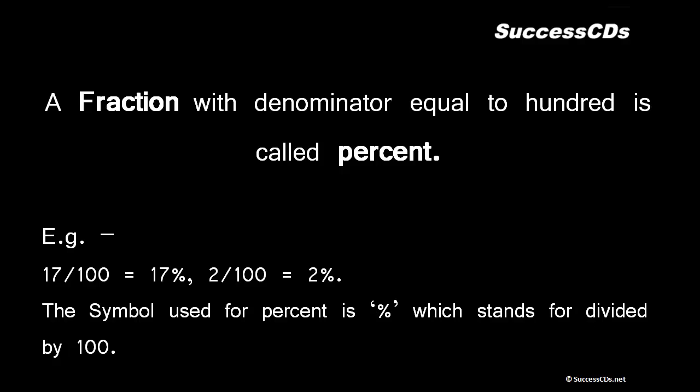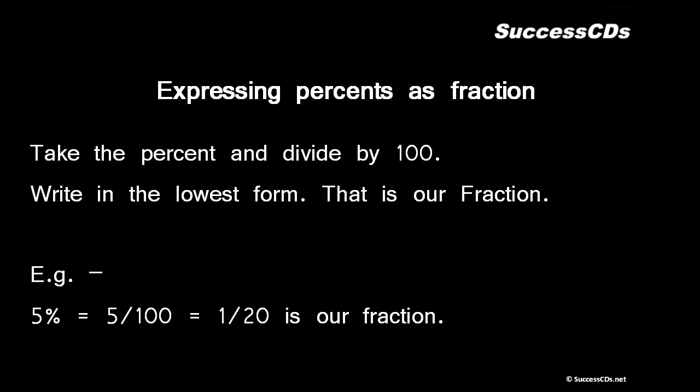So please don't get confused while expressing a percentage - it is not multiplied by 100 but actually divided by 100. Expressing percentage as fraction: take the percent, divide by 100, write in the lowest possible form. That means simplify it, cut out the factors. Let's take an example: 5 percent means basically 5 divided by 100. Now 5 and 100 are divisible by 5 and the answer comes out to be 1 upon 20 in the lowest possible form.